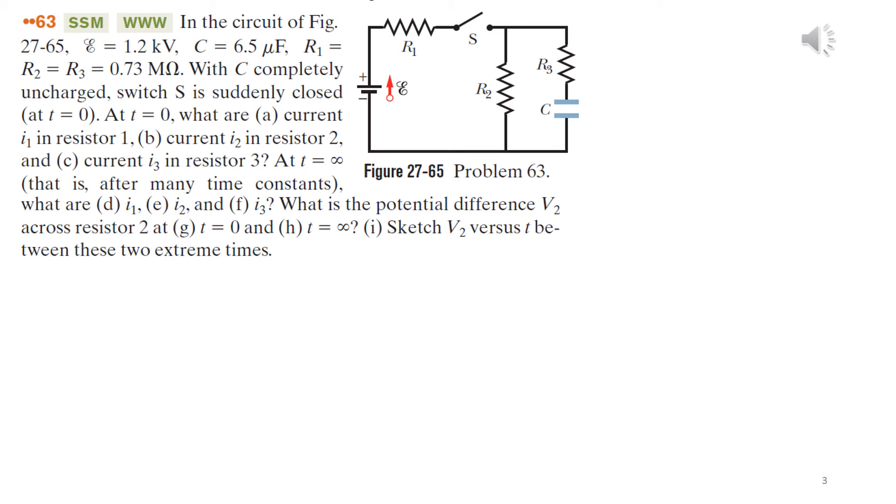In this problem we have all the constants. The only unknown is the current as usual. So we have two loops and we have three currents. To solve this problem they are saying that initially the capacitor was uncharged. When we say that,